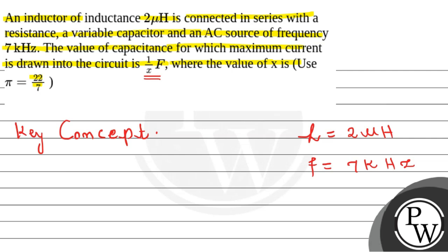Basically here maximum current is drawn. So maximum current is drawn in resonance condition. The inductive reactance should be equal to the capacitive reactance. So simply by using this conceptual formula, we can find the required capacitance.